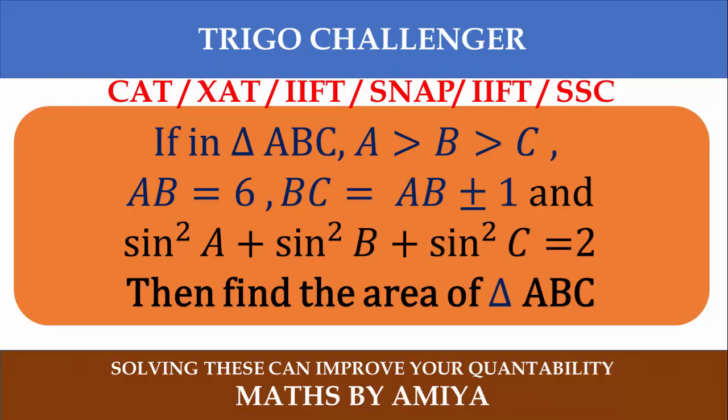Question in front of you: if in triangle ABC, A is bigger than B, B is bigger than C, and AB is given 6 units, and BC is either 1 more than AB or 1 less than AB, and sin²A + sin²B + sin²C equals 2, then you need to find the area of triangle ABC.